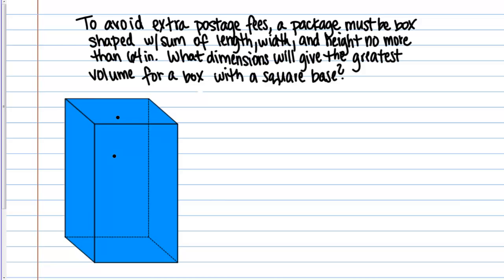I already have the basis for a picture here — I have my box, and now I just need to label my variables. We're told this is going to be a box with a square base, so the dimensions of the base are going to be the same. I'm going to call that W, so the base is W by W. And then a box has three dimensions — length, width, and height — so I need a variable for the height. I'll call that H. So I have all my dimensions named.